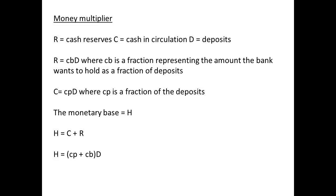H equals C plus R. The reserves are a fraction of deposits the bank will hold; the fraction is Cb. So R equals Cb multiplied by D, where D equals total deposits. The cash is also a fraction of the deposits, so C equals Cp multiplied by D. Thus, if H equals C plus R, then H equals Cp plus Cb multiplied by D.